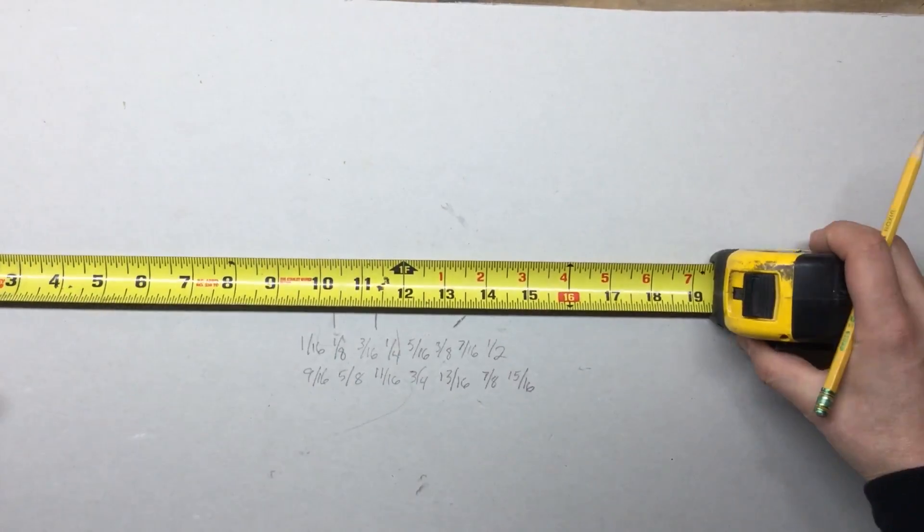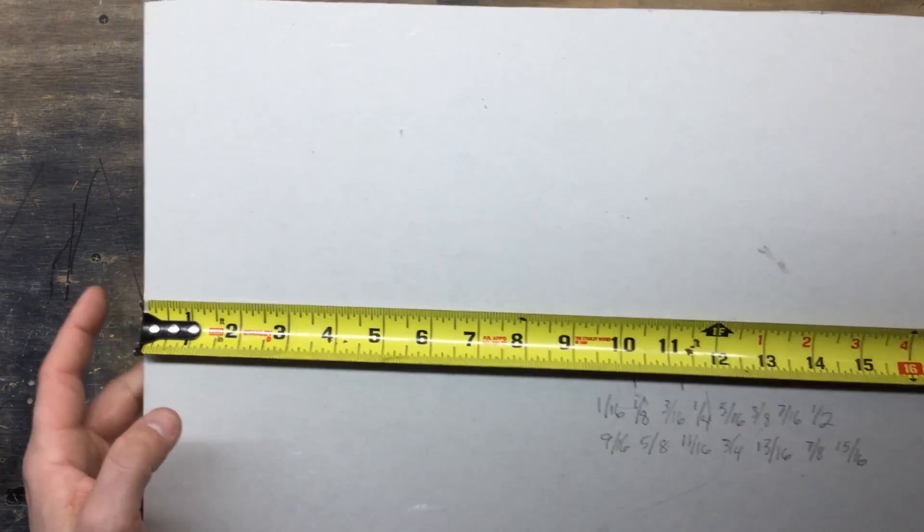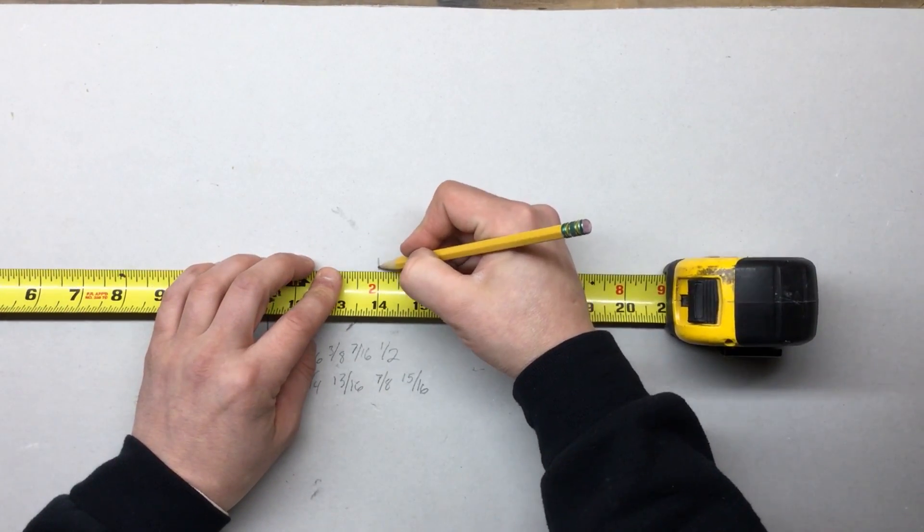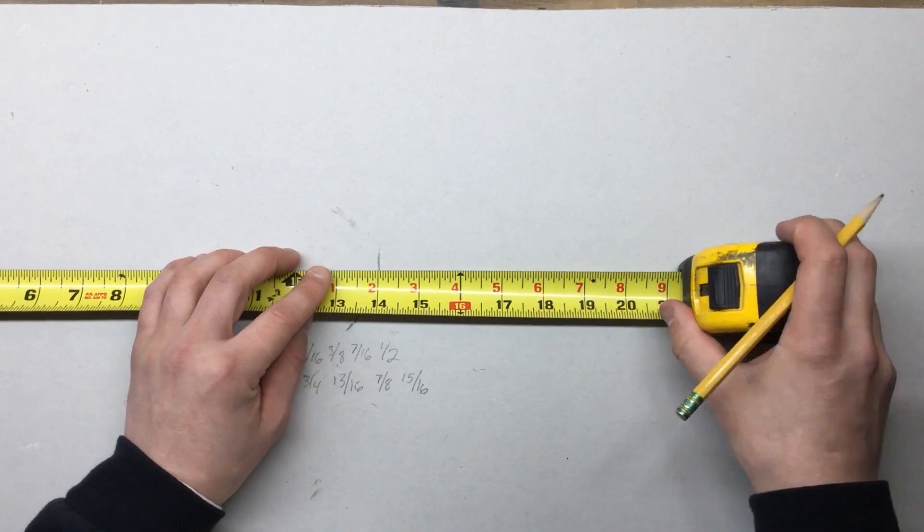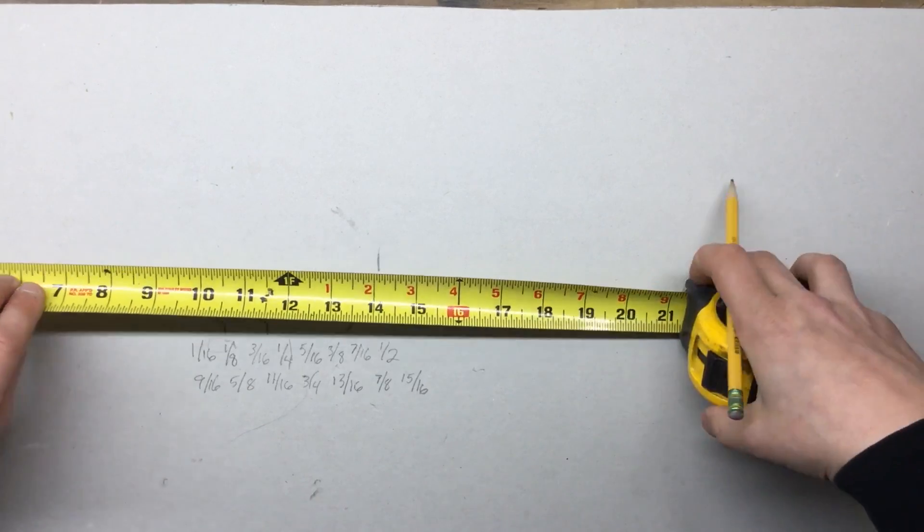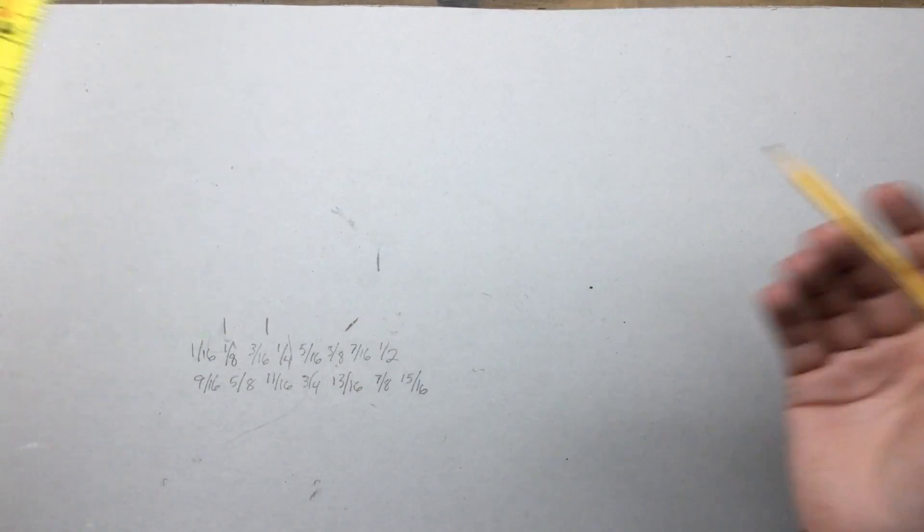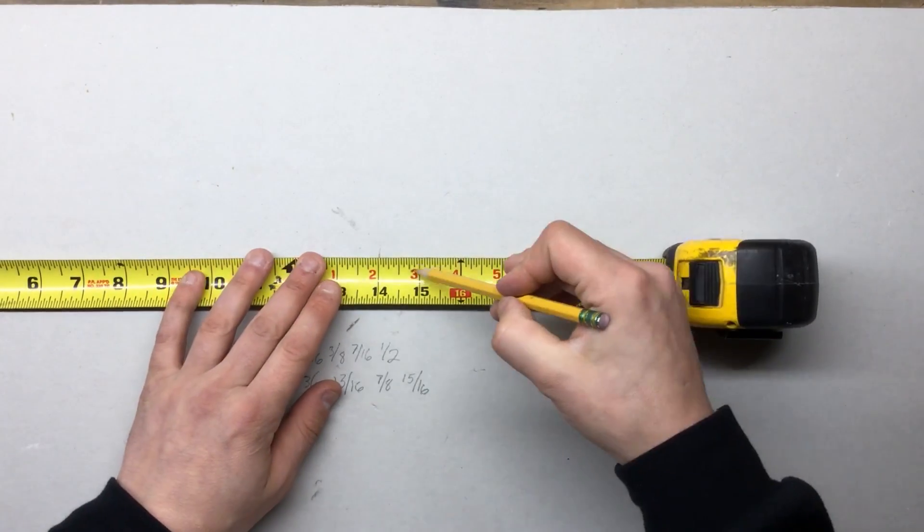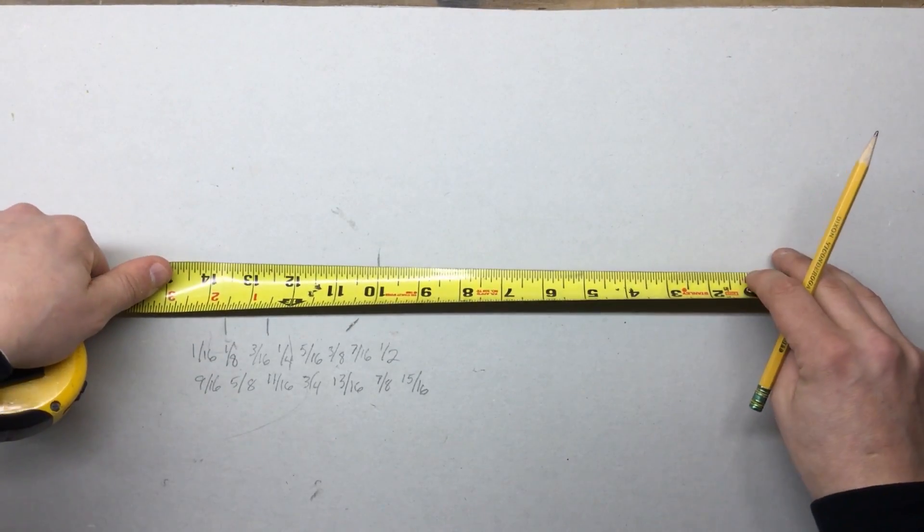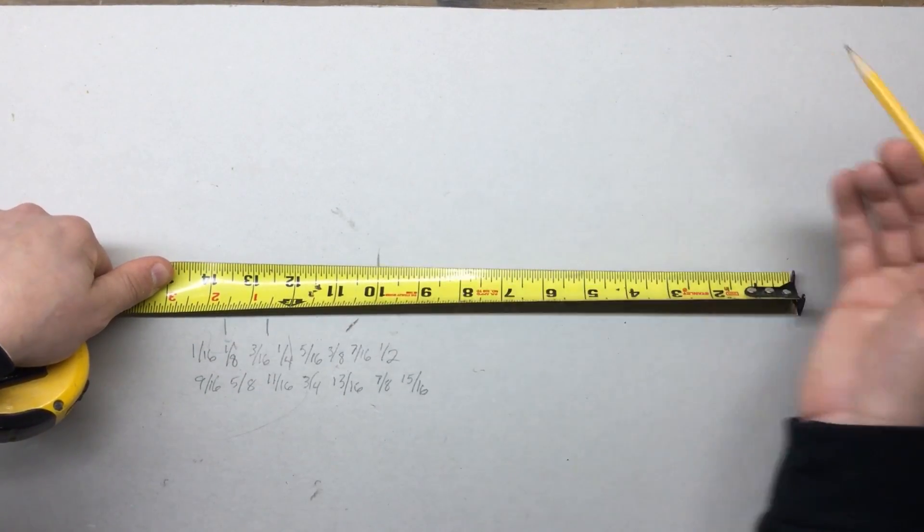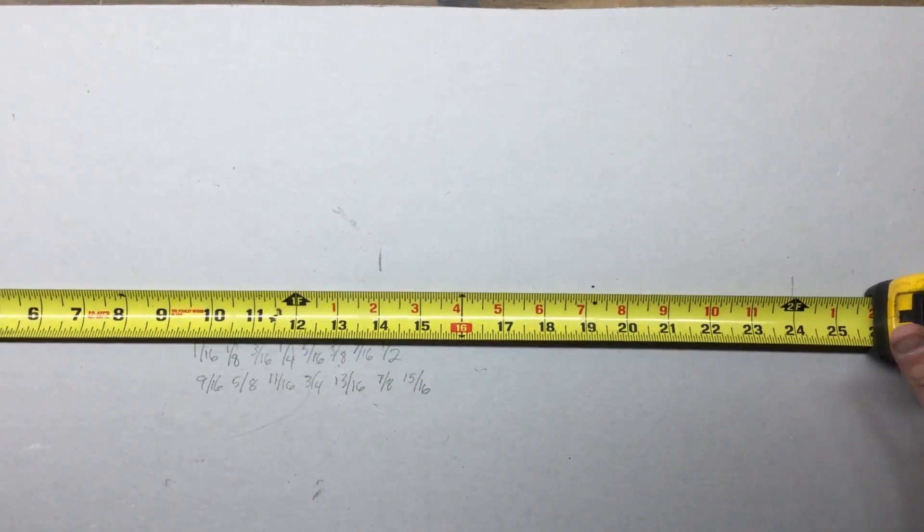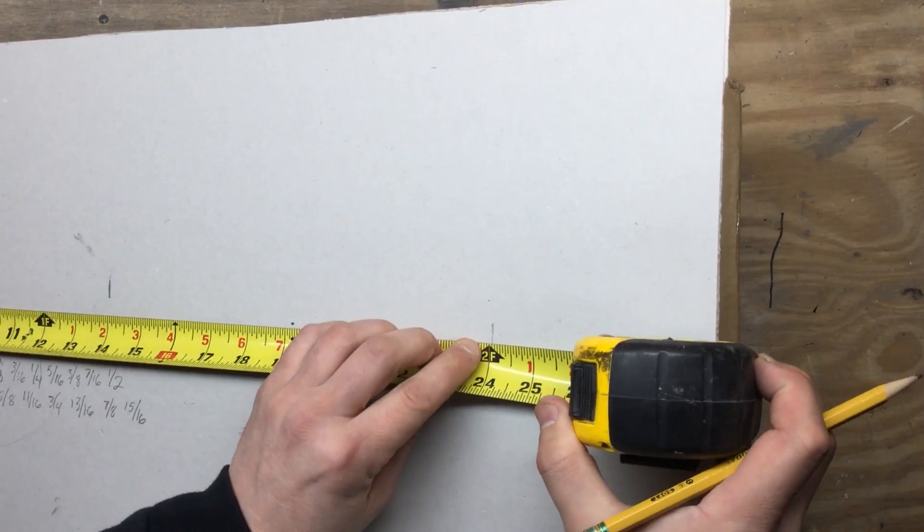Another thing you can do is lock your tape on something like this, and mark fourteen inches. And say you wanted to add more than what you want to count. So we'll say you want to add ten inches, and you don't want to count one, two, three, four, five. You can put your tape at ten inches, mark the end, and then grab your tape here, measure, twenty-four inches.